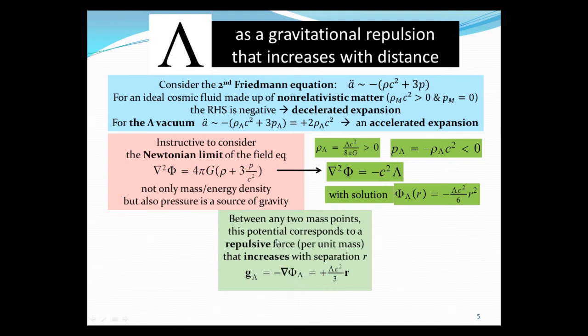Between two mass points, this potential corresponds to a repulsive force per unit mass that increases with separation. Because you take the force per unit mass, which is the g factor, which is minus the gradient of the potential. And you plug this potential in, you just take the minus minus, they cancel, then you have the r squared derivative which just becomes lambda c squared over 3 times r.